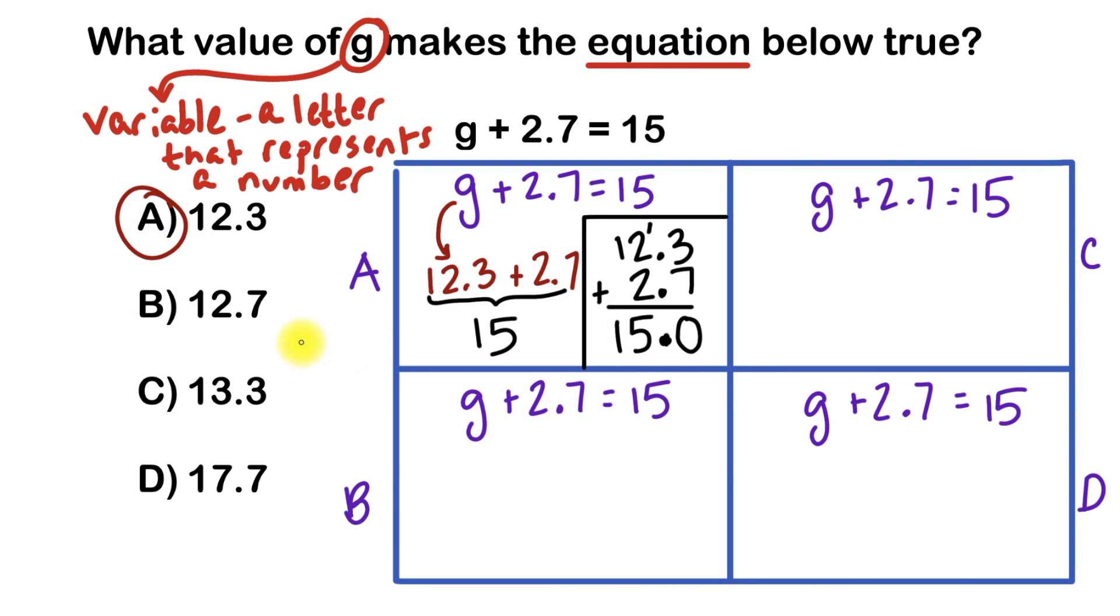I'm also going to make sure that I go through all the other choices. You don't have to watch the rest. But I just want to make sure that I reinforce the fact that whenever you're adding decimals, you must make sure you line up the decimal point. So if we're doing choice B, 12.7 would be where G goes. So that would be 12.7 here.